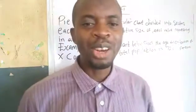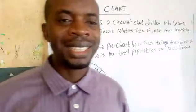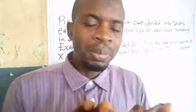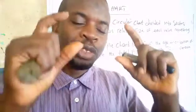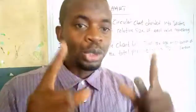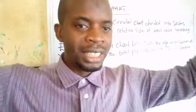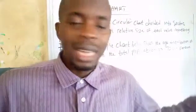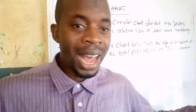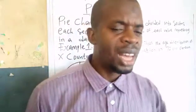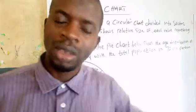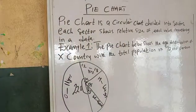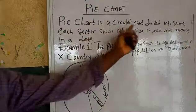Hello viewers, today we are going to be looking at pie charts. A pie chart simply means a system of using a circle to present large data. When you are using a circle to present large data, you are using a pie chart. Pie chart is one of the tools used in economics and other areas of study.